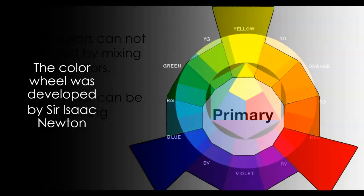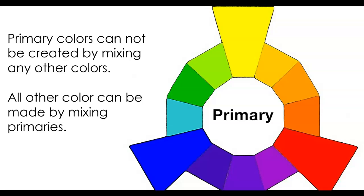The color wheel was developed by Sir Isaac Newton. There are three primary colors. These primary colors cannot be created by mixing any other colors. The three primary colors include yellow, red, and blue.